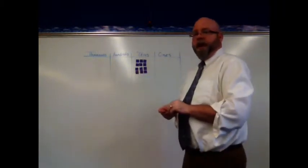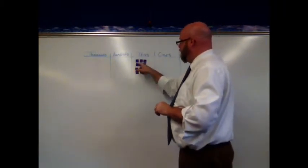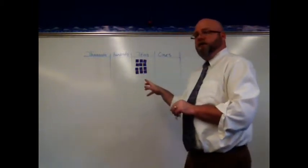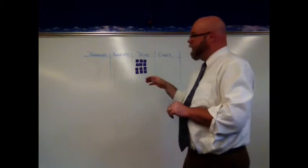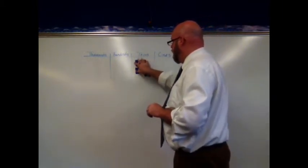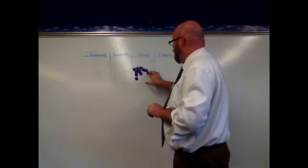Okay, now we see we have one, two, three, four, five, six, seven, eight, nine, ten, eleven, twelve tens, or 120. So we think about that. We can take these ten of these tens, and we can make those 100.